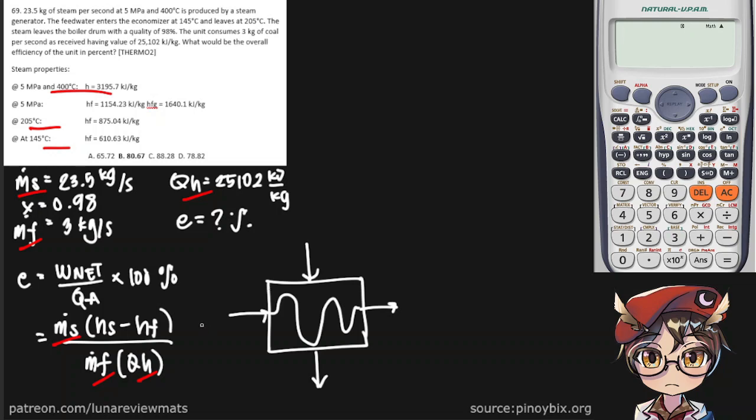So we know that our steam entering is Hs here and exiting here. And then we know that when the feed water enters, it is at 145 degrees C. And when it exits, it is at 205°C.